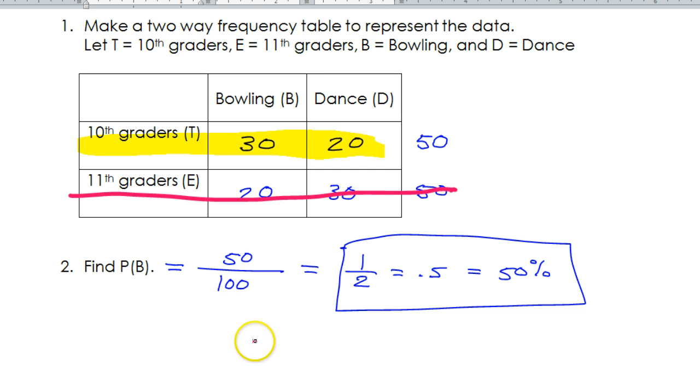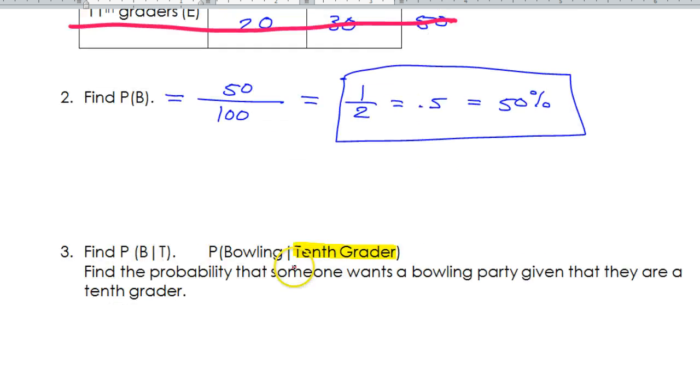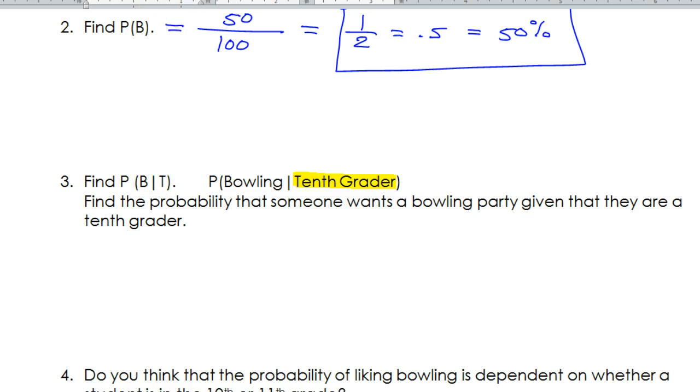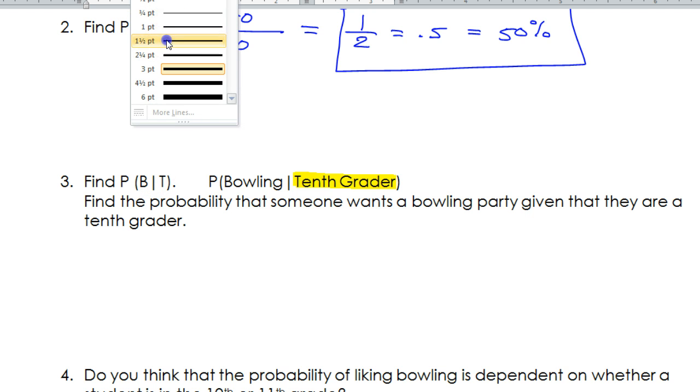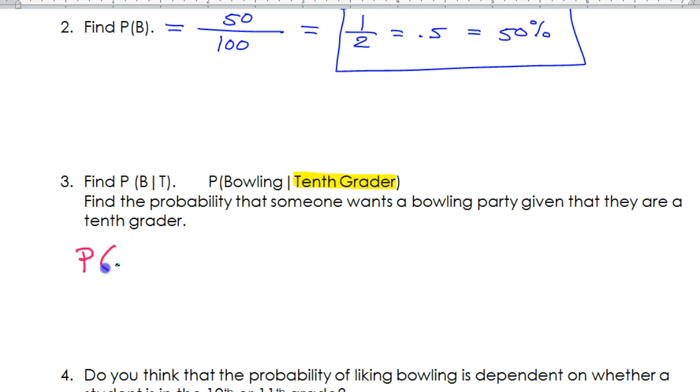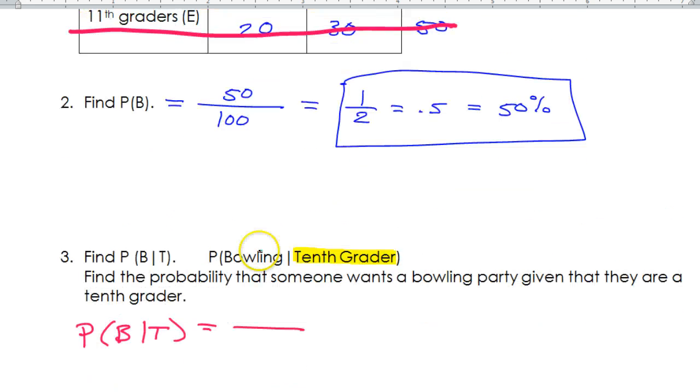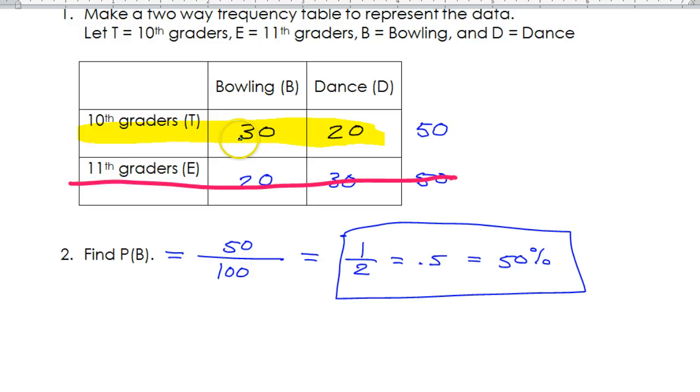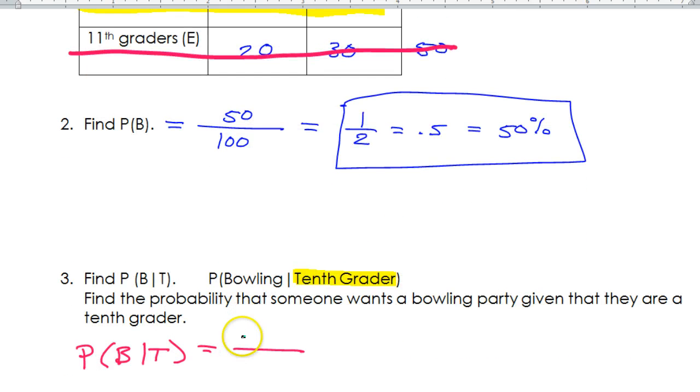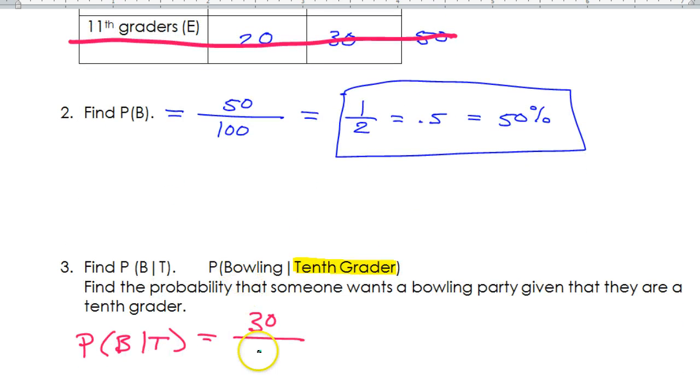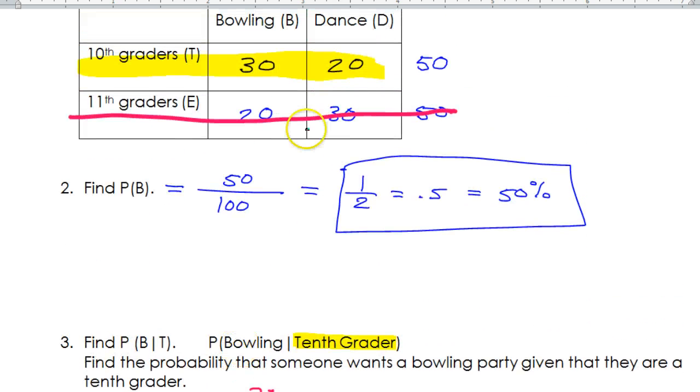So we're supposed to calculate that probability. Probability, as always, is a target over total. So the probability of picking somebody who wants bowling, given that they are a 10th grader. The target is bowling, so that's 30. Out of the total. We are not going to do 100, because that included 11th graders. But now we're given that it's 10th graders.